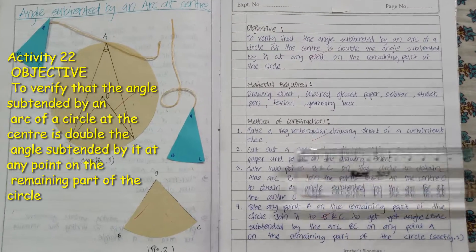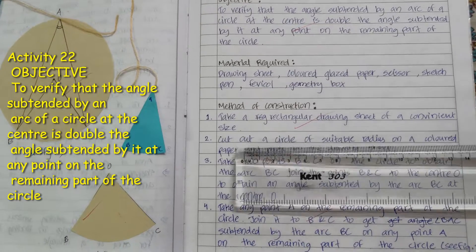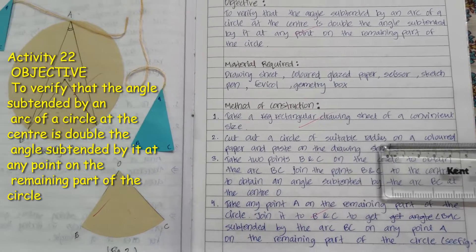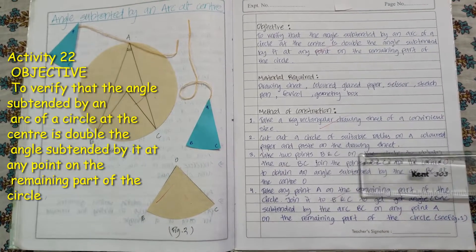Methods of construction. First, take a rectangular drawing sheet of a convenient size. Second, cut out a circle of suitable radius on a colored paper and paste on the white sheet.